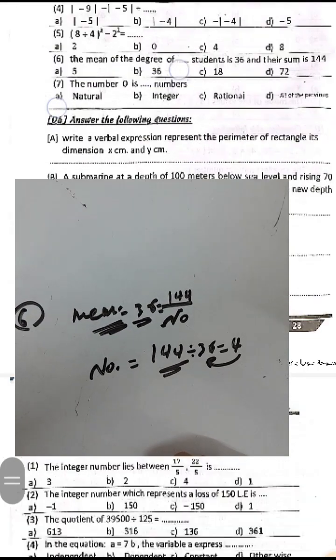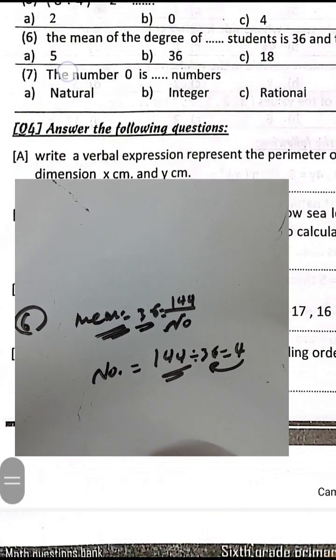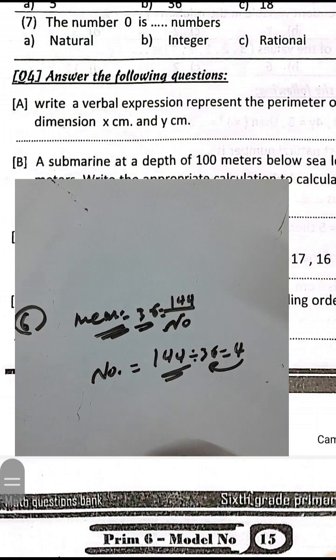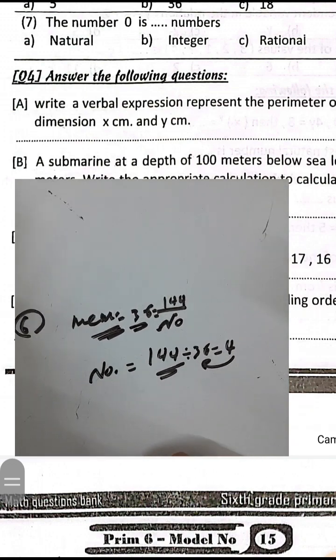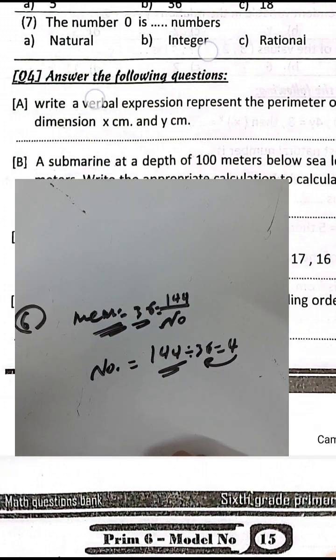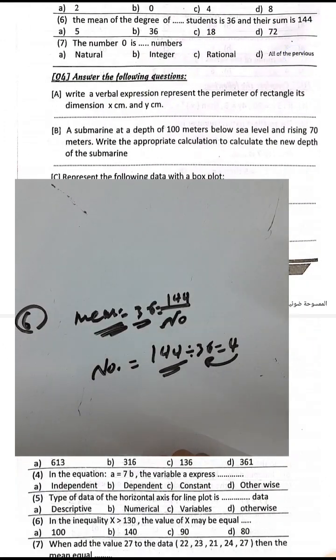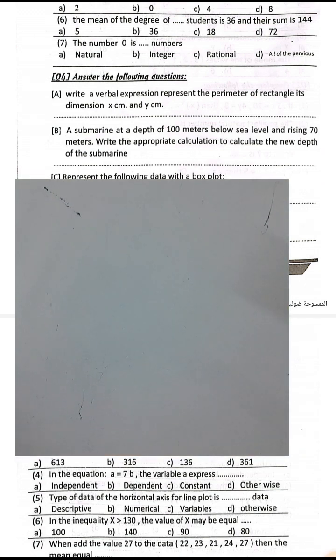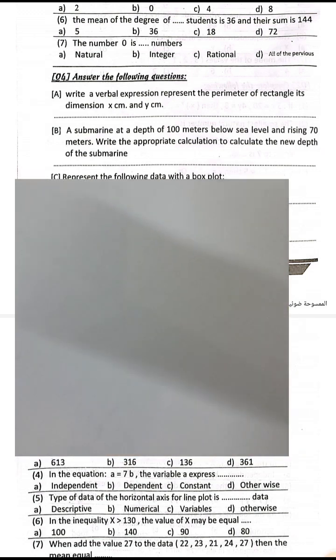Question number 7: The number 0 is a natural number, a rational number, and an integer — it belongs to all of the above categories.